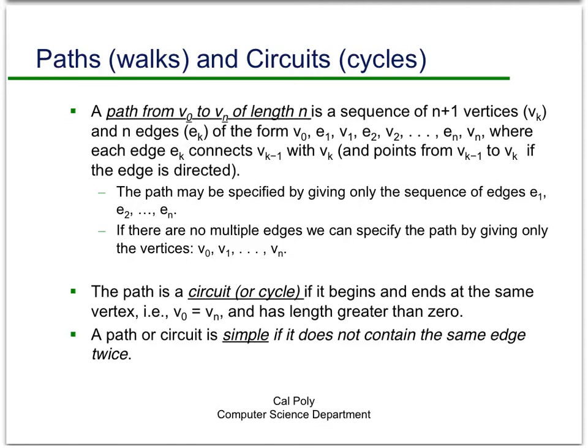Each edge E sub k connects the vertex V sub k minus 1 with the vertex V sub k. The path is usually specified by giving the sequence either of edges or of vertices. Most of our graphs are going to be simple graphs, so we don't need to worry about multiple edges. Most of the time, we'll be using just the sequence of vertices.